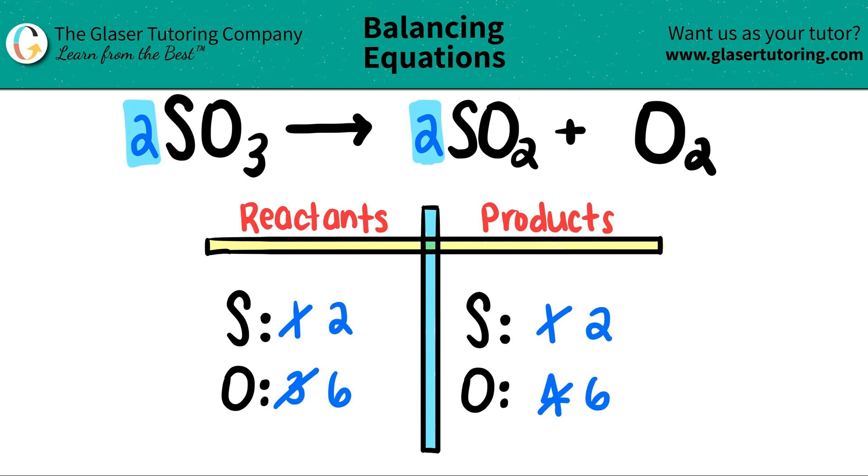And look at that guys. Everything is balanced. Two sulfurs on the left and the right side, six oxygens on the left and the right side. So you are done. So the final balanced equation is 2 SO3, which will yield 2 SO2 plus 1 O2.